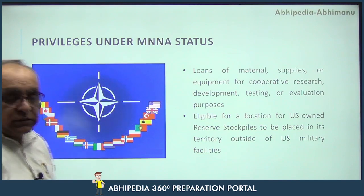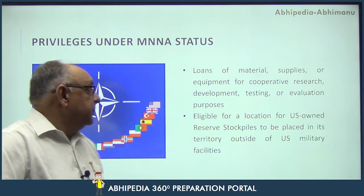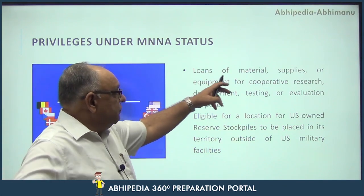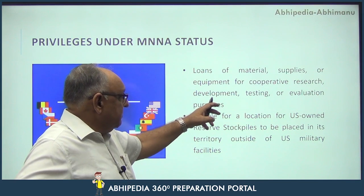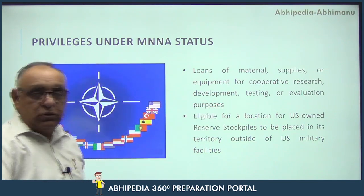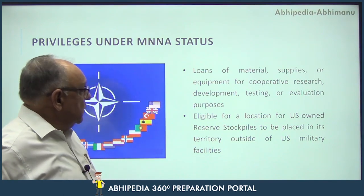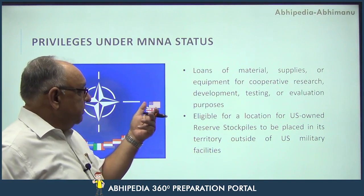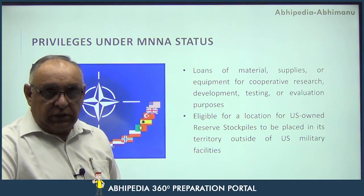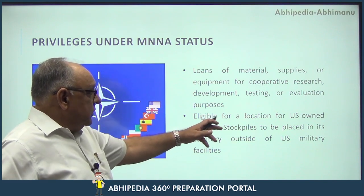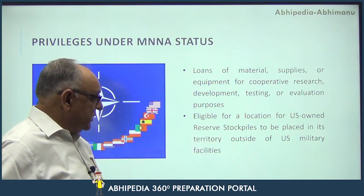What are the privileges under the MNNA status — which privileges does a foreign country receive? The first is loans of material, supplies, or equipment for cooperative research, development, testing, or evaluation purposes. So whatever country America gives MNNA status to, that country can take loans of material, supplies, and equipment for cooperative research, development, testing, or evaluation. They are also eligible for allocation of US-owned reserve stockpiles to be placed in their territory outside of US military facilities.